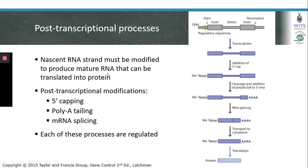During the process of transcription, an mRNA is prepared for the subsequent process of translation, and these post-transcriptional processes are involved in preparing the mRNA for translation. Post-transcriptional modifications include 5' capping, poly-A tailing, and mRNA splicing, and each of these processes are regulated. We'll now discuss 5' capping and poly-A tailing.